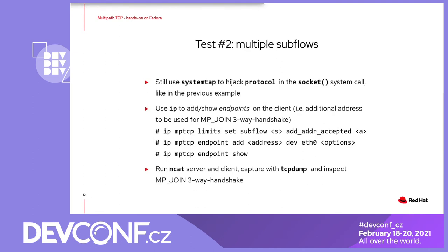Now that we know how to run NCAT as an MPTCP application, let's see how a single socket can set up multiple TCP subflows. In this second example, we are going to use the IP command to configure the client's namespace with a number of subflows greater than 1. Then we will use IP to manually add a second endpoint in the client. When NCAT opens the MPTCP socket, the kernel connects with the server just like the previous scenario, but after the first 3-way handshake is done, the client knows that there is a second endpoint and establishes a new TCP subflow that can be used for data.